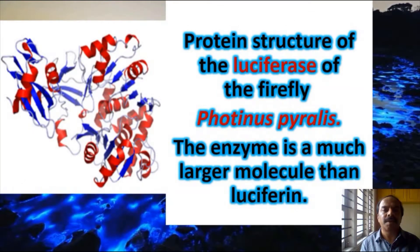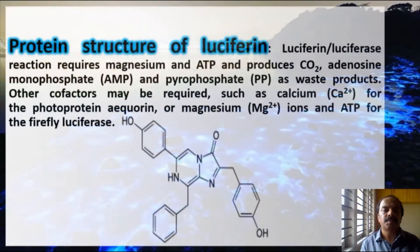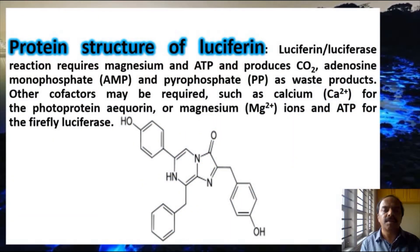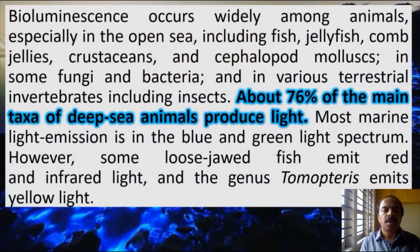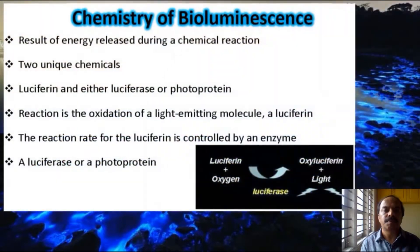This is the luciferase enzyme, which is extracted from the firefly Photinus pyralis. This is luciferin — the chemical involved in bioluminescence — which is converted to oxyluciferin by the luciferase enzyme. Bioluminescence occurs in a wide variety of animals and plants; about 76 percent of deep sea animals are known to exhibit luminescence. The chemistry of bioluminescence is actually very simple.